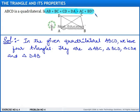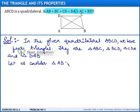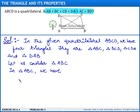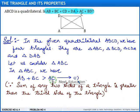To verify this result, we need to consider each of these triangles. Let us consider the first triangle, triangle ABC. In triangle ABC, we have AB plus BC is greater than AC. We can say this since we know that the sum of any two sides of a triangle is greater than the third side. We call this Result 1.